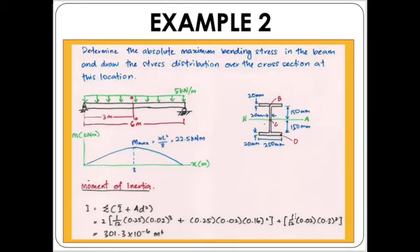Now let's look into Example 2. Determine the absolute maximum bending stress in a beam and draw the stress distribution over the cross section at this location. As we can see, this is a simply supported beam with a UDL of 5 kilonewtons per meter, sitting on a simply supported beam with a length of 6 meters.